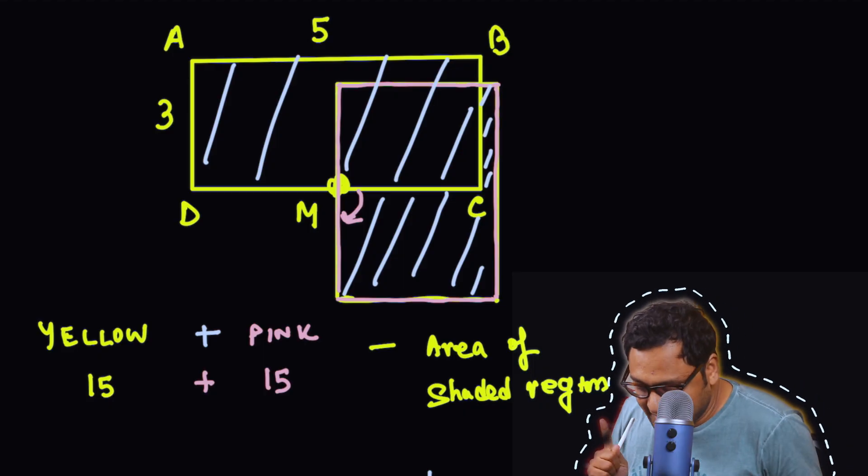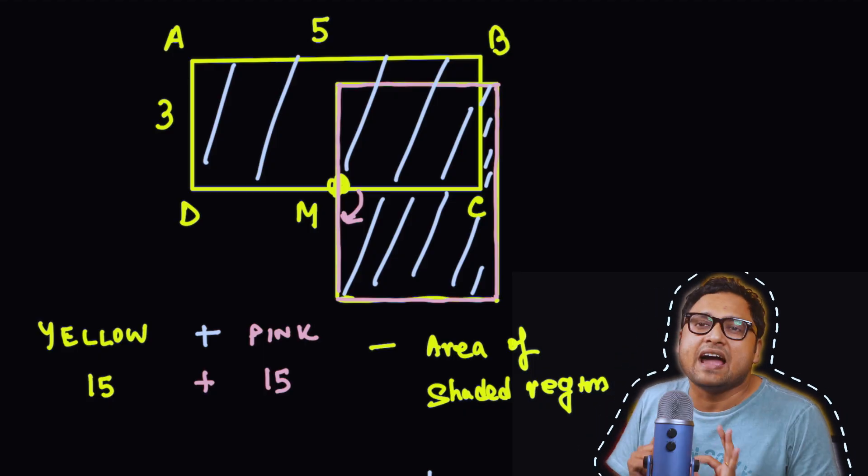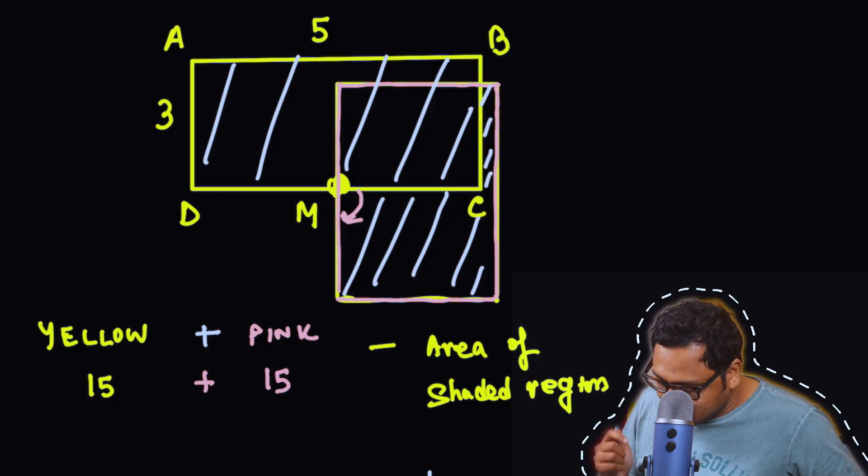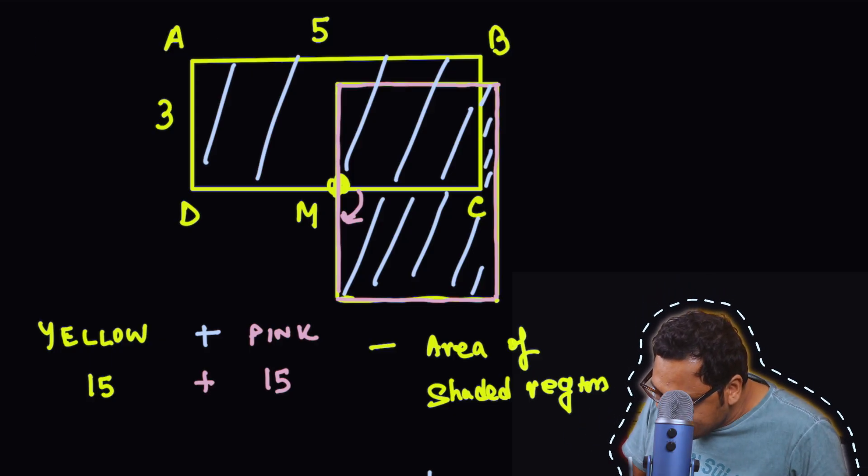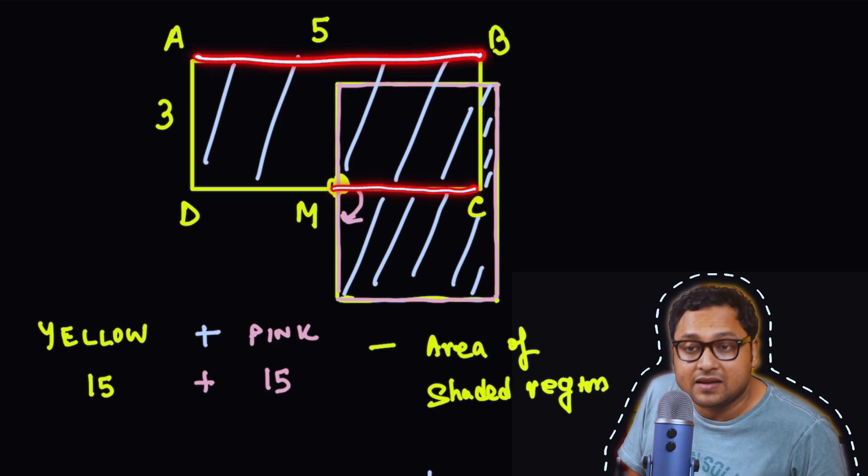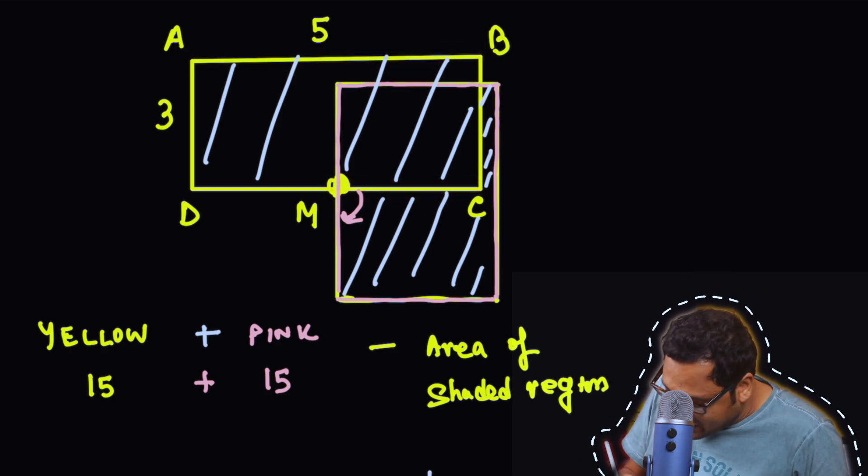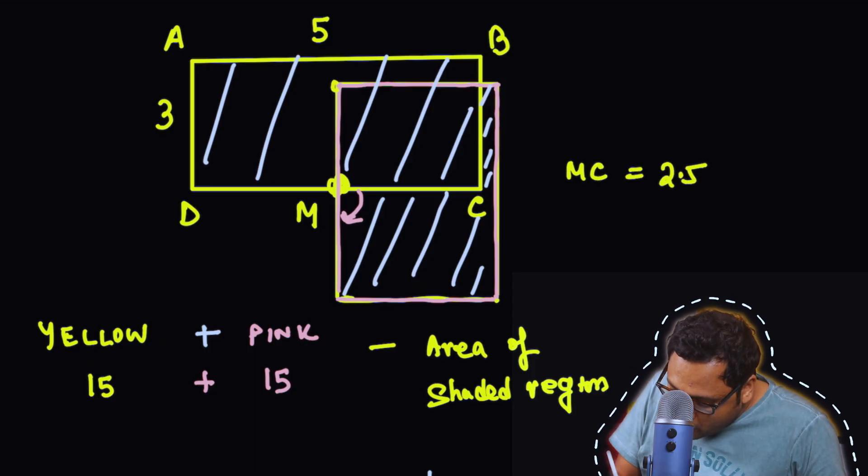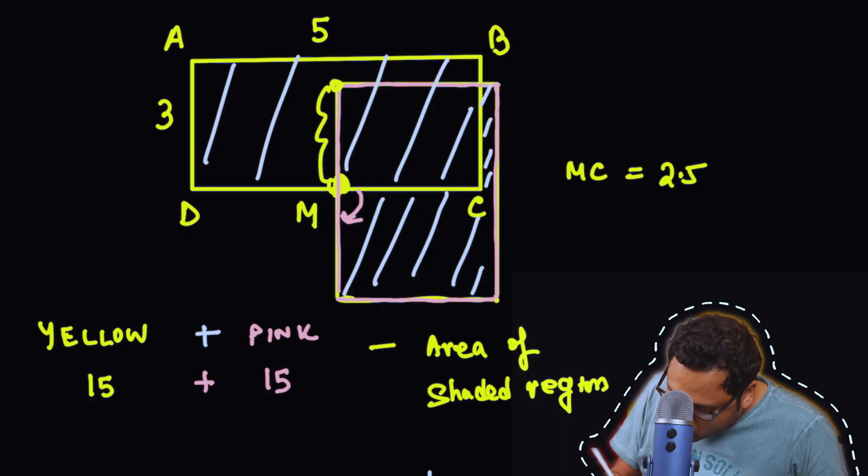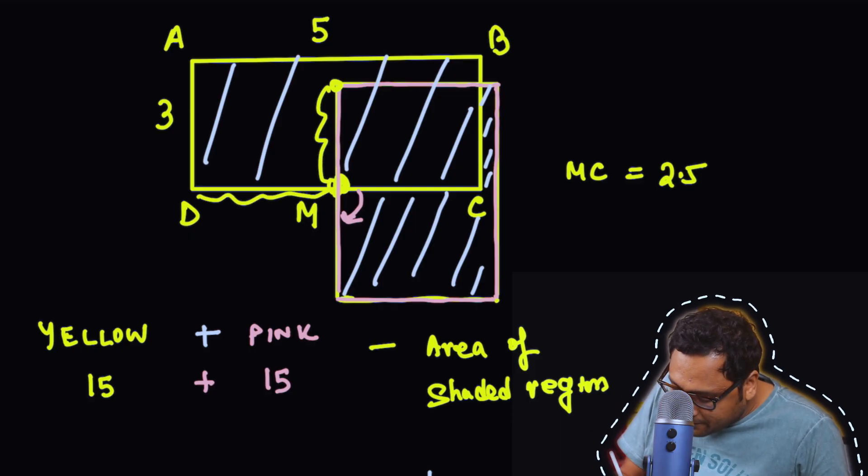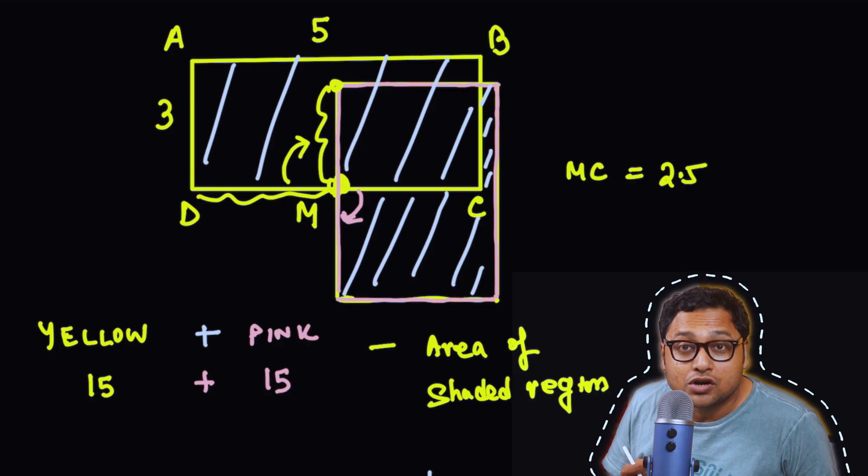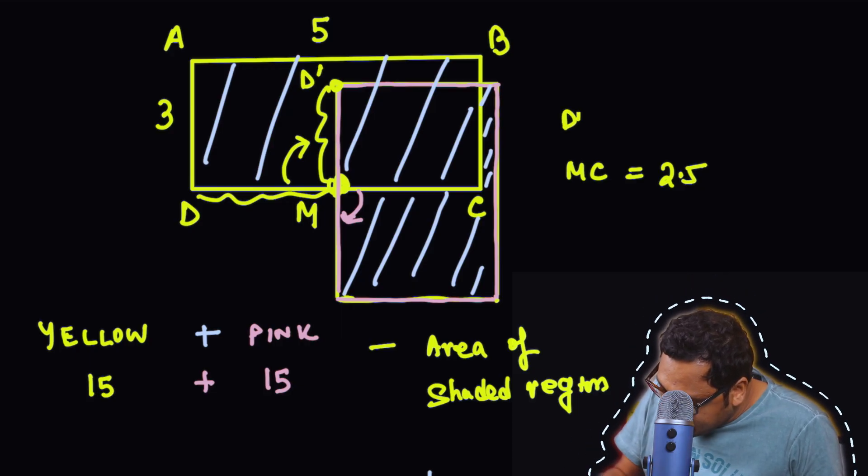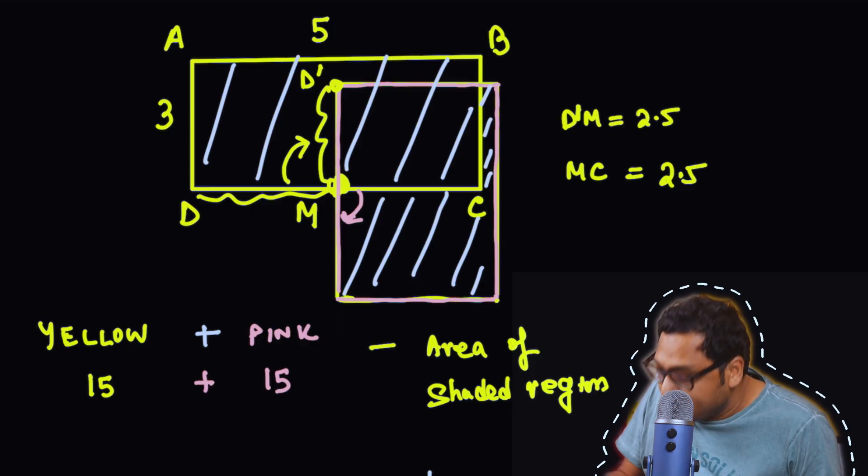Now that we understand this, we have to just find the area of the shaded region and we would be done. Let's do that carefully. First of all, MC, this much, is only half of AB. That is, it's 2.5. MC is 2.5. And this point up, so this much, is just the rotated version of DM. So that is also 2.5. This point is D prime, suppose. Then D prime M is also 2.5.